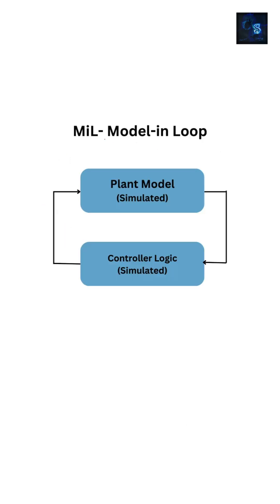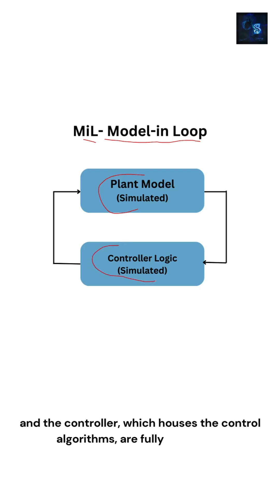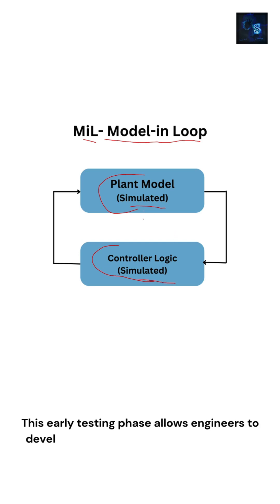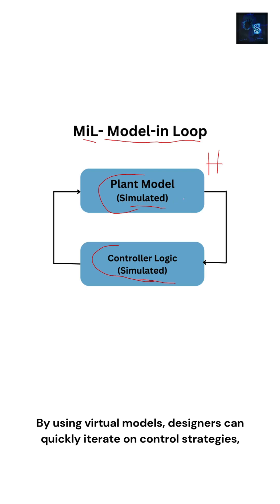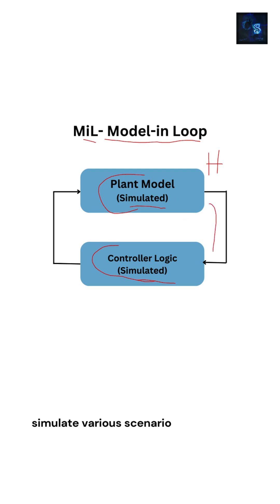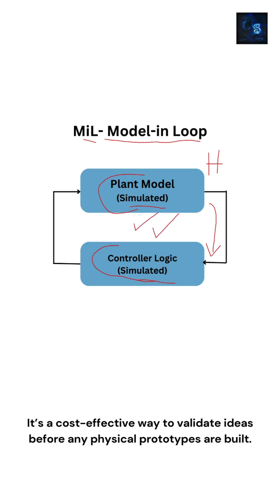Our first stage is Model in the Loop, or MIL. In MIL, both the plant, which represents the vehicle dynamics, and the controller, which houses the control algorithms, are fully simulated. This early testing phase allows engineers to develop and refine algorithms without the need for any hardware. By using virtual models, designers can quickly iterate on control strategies, simulate various scenarios, and identify issues early on. It's a cost-effective way to validate ideas before any physical prototypes are built.